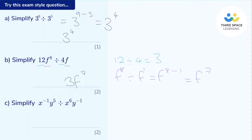Part C — there's a little more going on here, but we're going to do it in exactly the same way. Let's start with those x's: x to the power of negative one divided by x to the power of six. The laws of indices tell me I can subtract those powers because I'm dividing terms with the same base. So this is x to the power of negative one take away six, and negative one take away six is just negative seven.